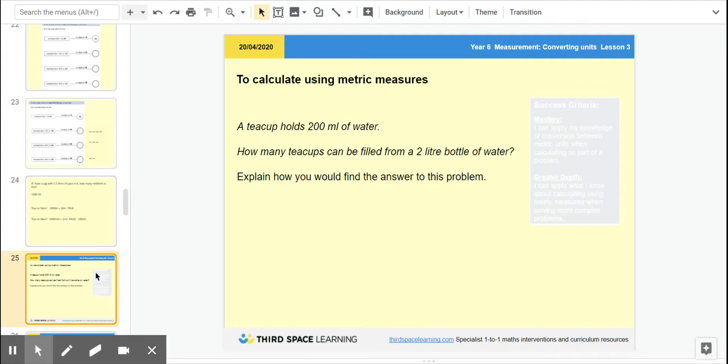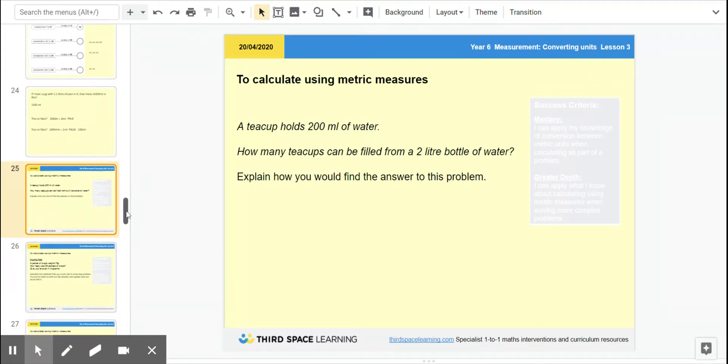Okay, so to calculate using metric measures, a teacup holds 200 milliliters of water. How many teacups can be filled from a 2-liter bottle of water? Explain how you would find the answer to this problem. So pause and come back to me.